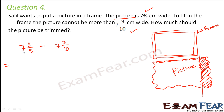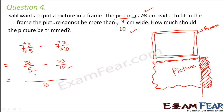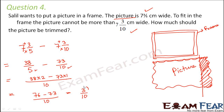The picture width 7⅗ is bigger. So from 7⅗ we subtract 7 3/10. Converting to improper fractions: 38/5 minus 73/10. The LCM of 5 and 10 is 10, so (38×2 − 73×1)/10 = (76 − 73)/10 = 3/10. So 3/10 cm needs to be trimmed from the picture.